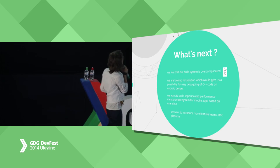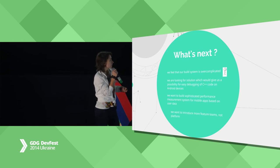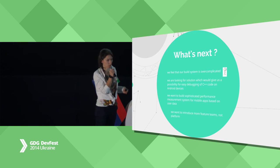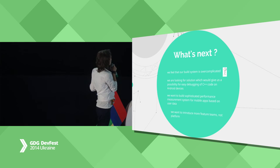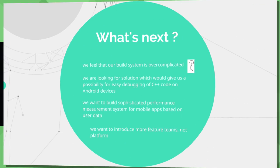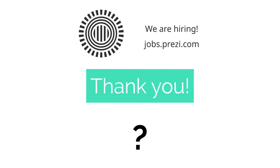What's next for us: we feel our build system is too complicated and we want to find an easier solution. We're also looking for something that gives us easy debugging of C++ code on Android devices especially. We want to build a sophisticated performance measurement system for mobile apps — we've made a few steps here but want to go further. And we want to use more feature teams rather than platform teams. We're happy to answer your questions — and check our jobs page because we are hiring.